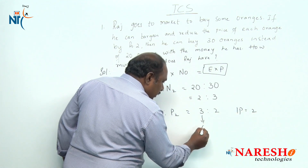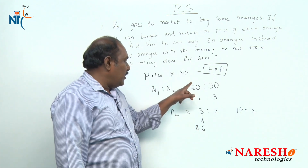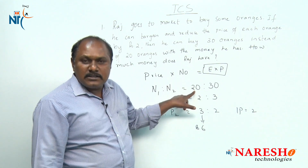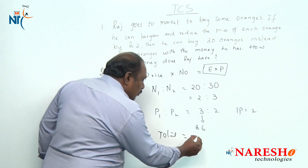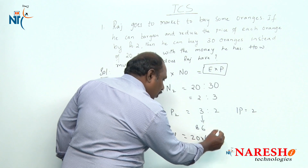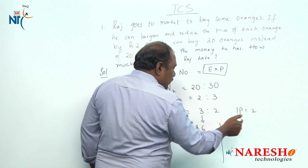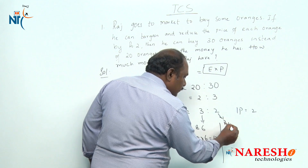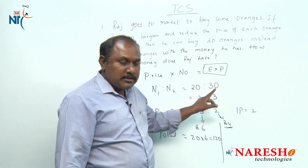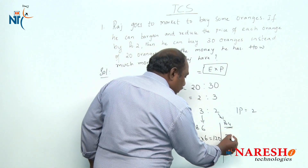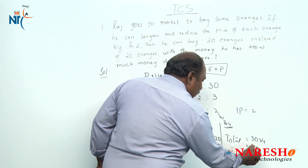If 1 part is 2 rupees, then 3 parts should be 6 rupees. So 6 rupees is the price of each orange when the number of oranges he was purchasing is 20. So the total money he has should be equal to 20 into 6, which is 120. Alternatively, 1 part is equal to 2 rupees, so 2 parts should be equal to 4 rupees. That means 4 rupees is the price of each orange when he is able to buy 30 oranges, so the total money spent should be equal to 30 into 4, which is 120 rupees.